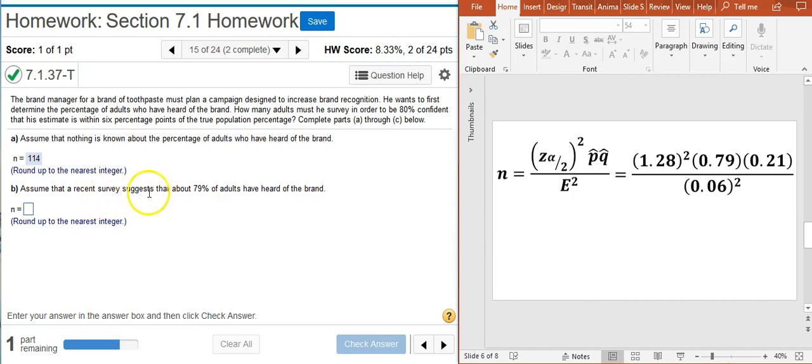The only thing that changes are values for p-hat and q-hat. We want a survey that suggests that 79% of adults have heard of the brand, so that's our proportion of success, which then means the proportion of failure is going to be the complement of that, so we'll just subtract 0.79 from 1 to get 0.21. And now we've got new numbers to put into our equation.